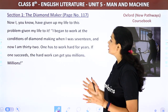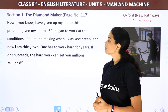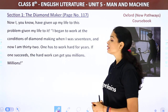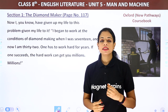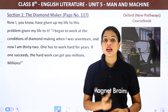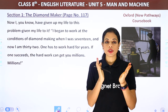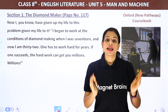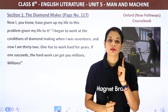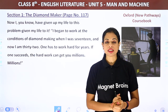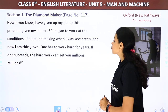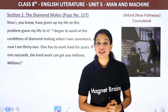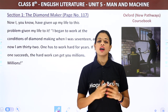'I have given up my life to this problem. I began to work at the conditions of diamond making when I was 17, and now I am 32.' For 15 years he had been working only on one thing — how to make diamonds. 'One has to work hard for years. If one succeeds, the hard work can get you millions.' Diamond making does not happen easily; a person must work for years.